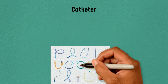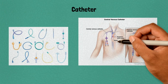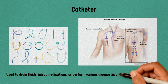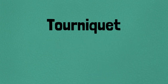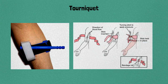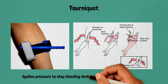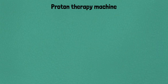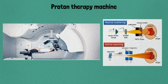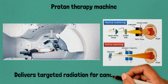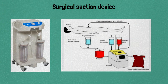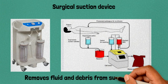Forty-one: catheter, used to drain fluids, inject medications, or perform diagnostic and treatment procedures. Forty-two: tourniquet, applies pressure to stop bleeding during surgeries or medical procedures. Forty-three: proton therapy machine, delivers targeted radiation for cancer treatment. Forty-four: surgical suction device, removes fluid and debris from surgical sites.